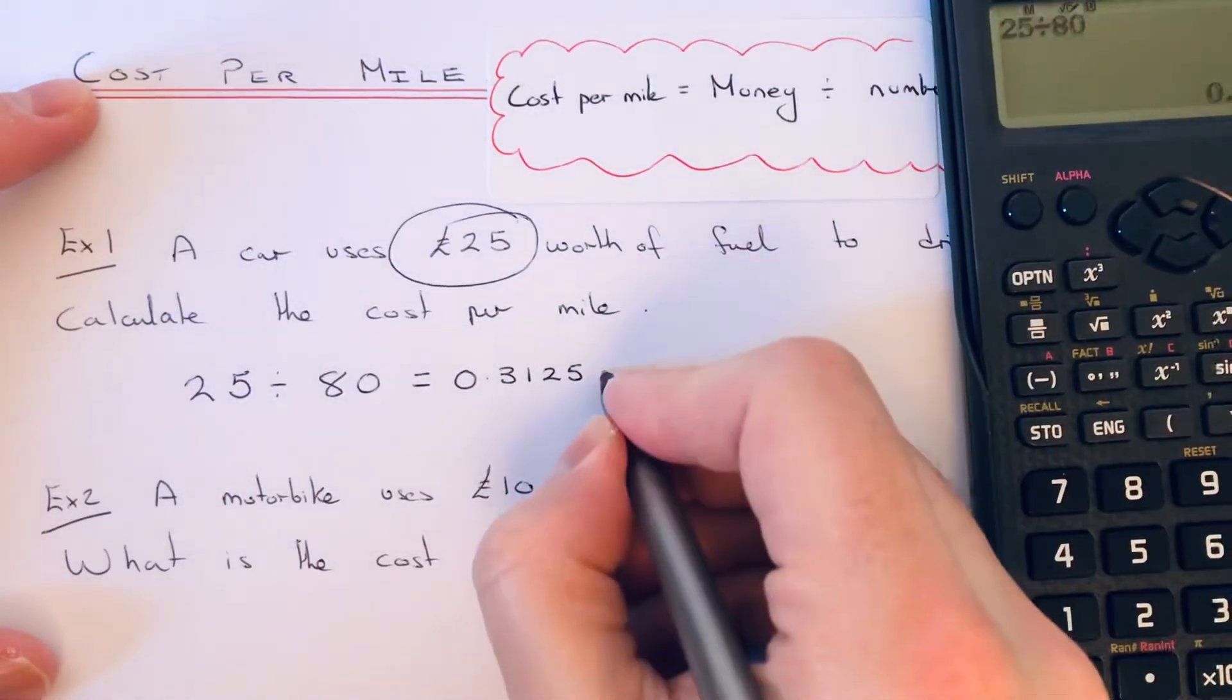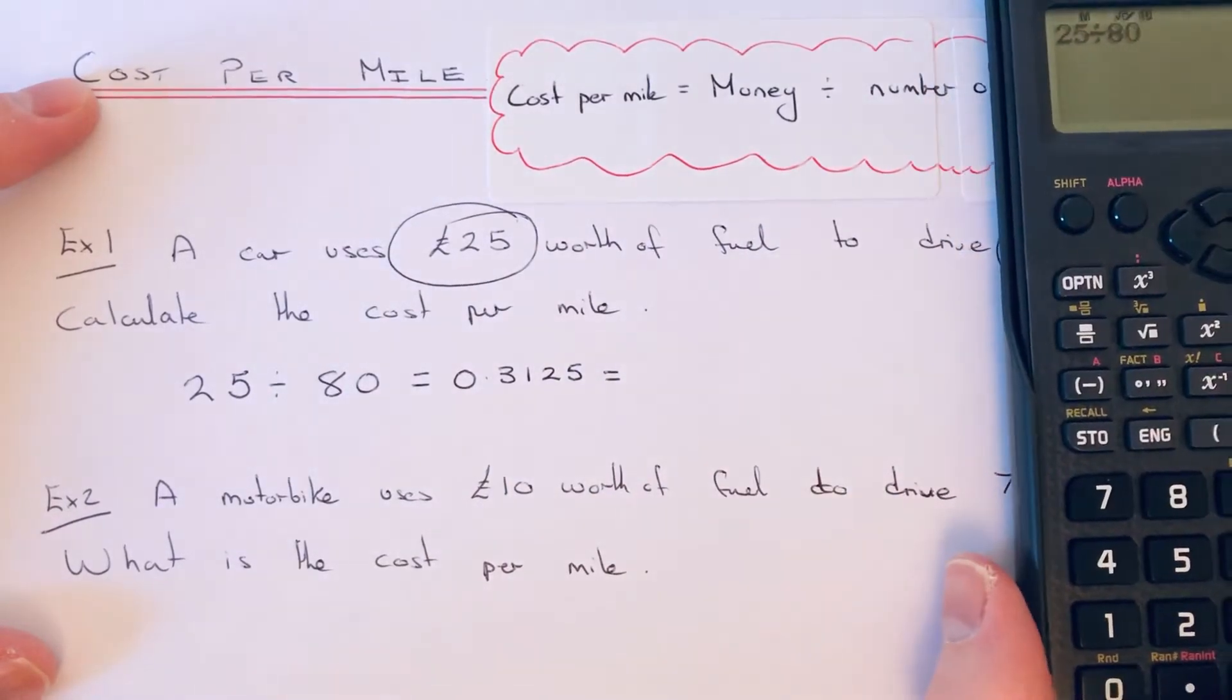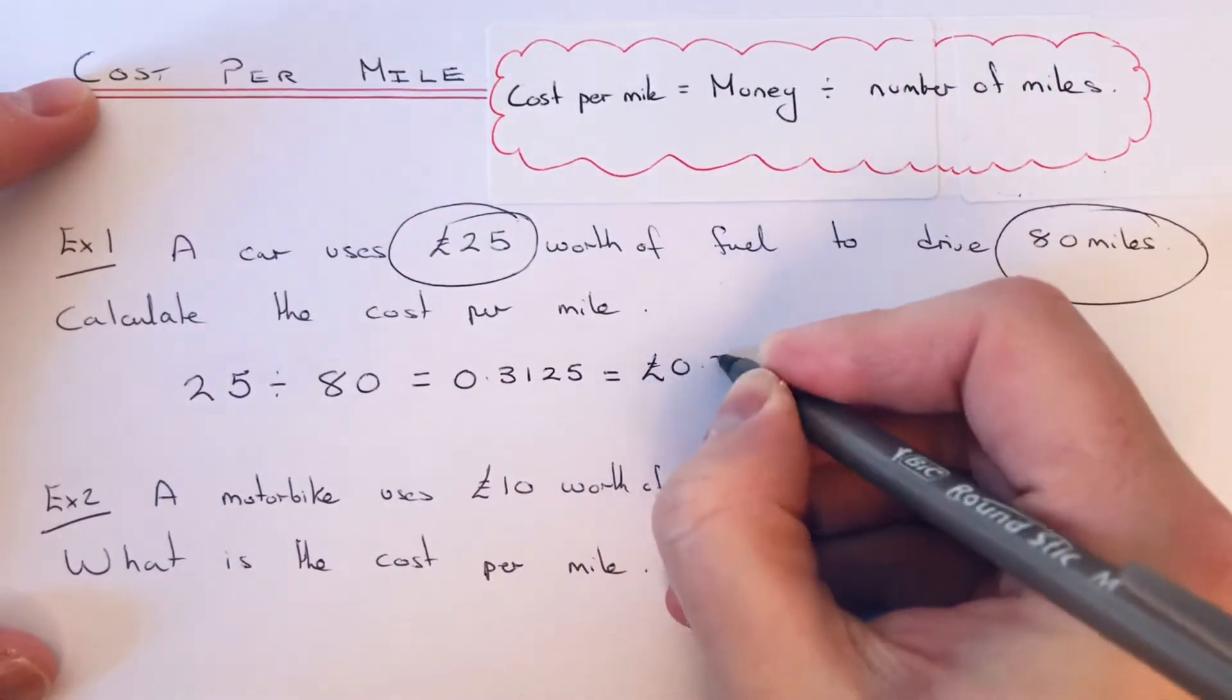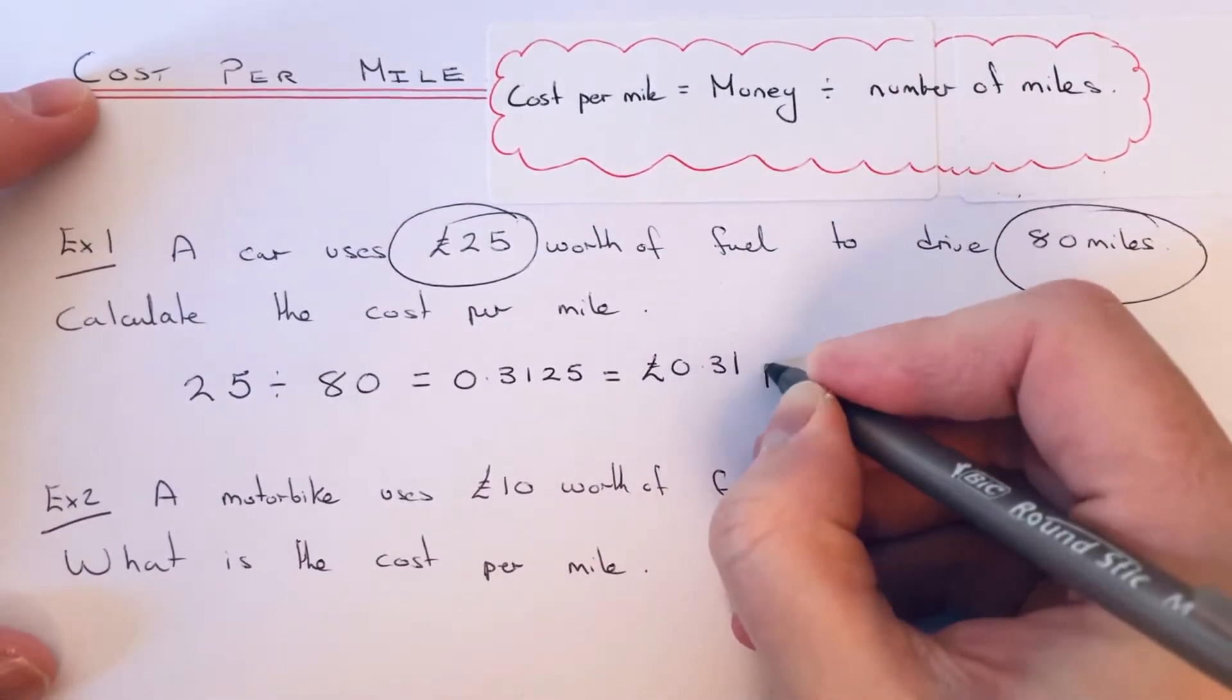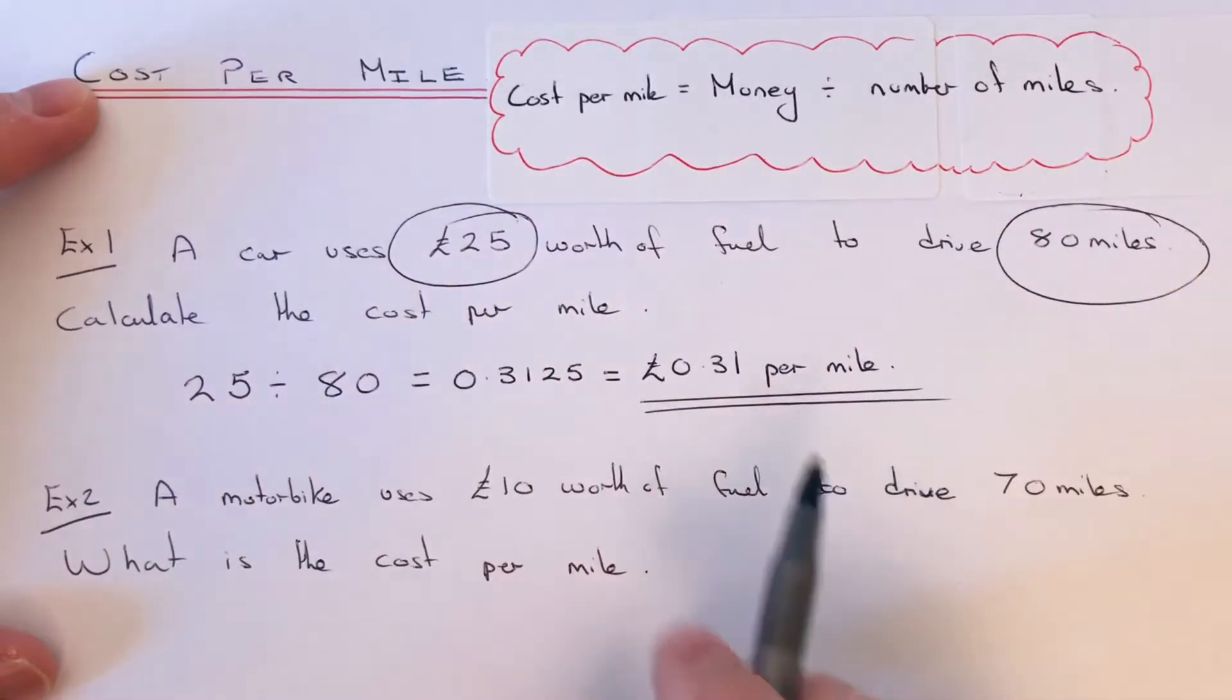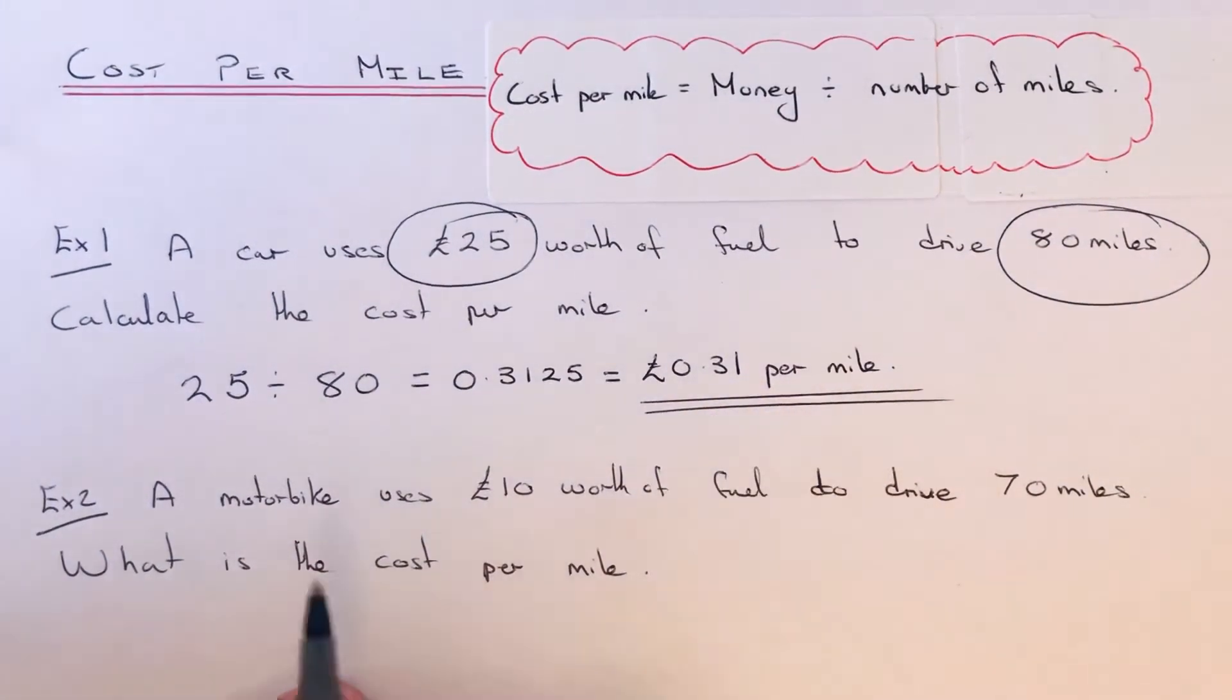I'm just going to round this off to two decimal places because it's a money question. So that would be £0.31. What it's telling us then is it costs 31 pence per mile.